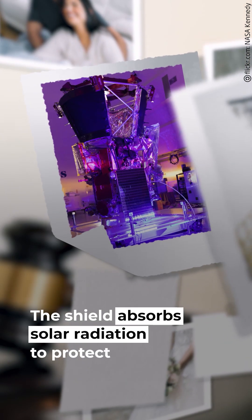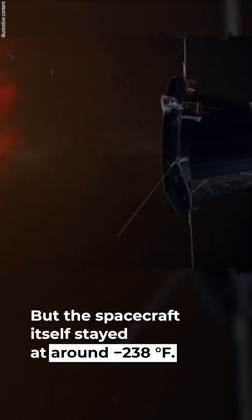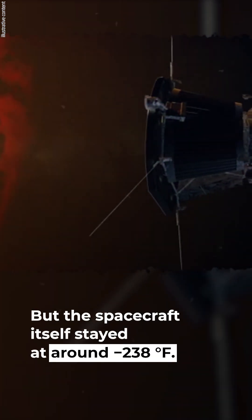The shield absorbs solar radiation to protect the inside of the probe. It has experienced temperatures of around 250 degrees Fahrenheit, but the spacecraft itself stayed at around minus 238 degrees Fahrenheit.